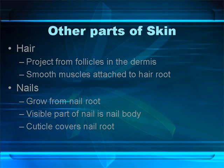Aside from the three major layers of the skin, there are other parts to your integumentary system. Your hair, fingernails, and toenails are all considered part of the integumentary system. Hair comes from follicles found within the dermis, and there are smooth muscles attached to the hair root — that's what causes chill bumps, where the hair on your arms or legs stands on end. Fingernails and toenails grow from a nail root found within the skin. The part of the nail you can see is the nail body, and the cuticle covers the actual nail root.